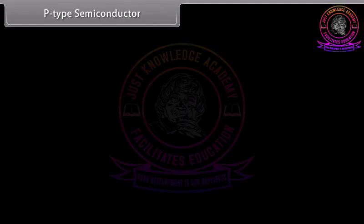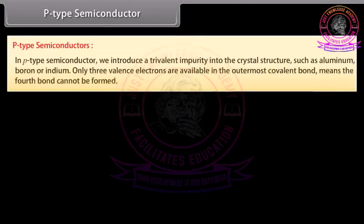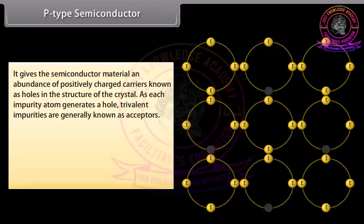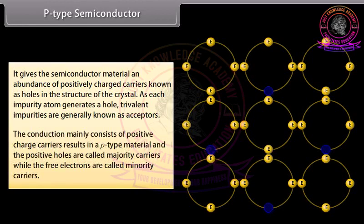P-type semiconductors: we introduce a trivalent impurity such as aluminium, boron, or indium into the crystal structure. Only 3 valence electrons are available in the outermost covalent bond, so the 4th bond cannot be formed. This gives the semiconductor material an abundance of positively charged carriers known as holes. As each impurity atom generates a hole, trivalent impurities are called acceptors. Positive holes are majority carriers while free electrons are minority carriers.